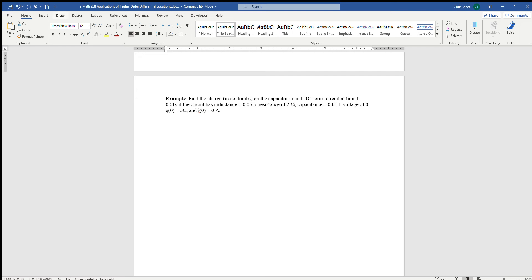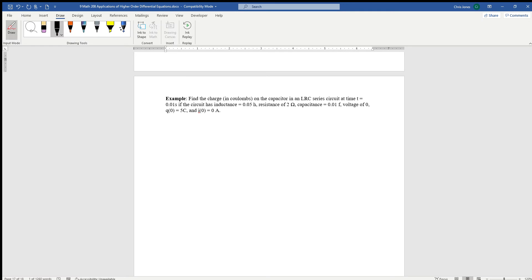Here's how we can write the formula. Q double prime, and we have L plus RQ prime plus one over CQ is equal to E of T. We know that L is 0.05, the resistance is 2 ohms, so R is 2. The capacitance C is 0.01, and E of T is zero, so we have a homogeneous type. Q at zero is 5, and Q prime at zero, which is really I, is equal to zero. Those are all our conditions.